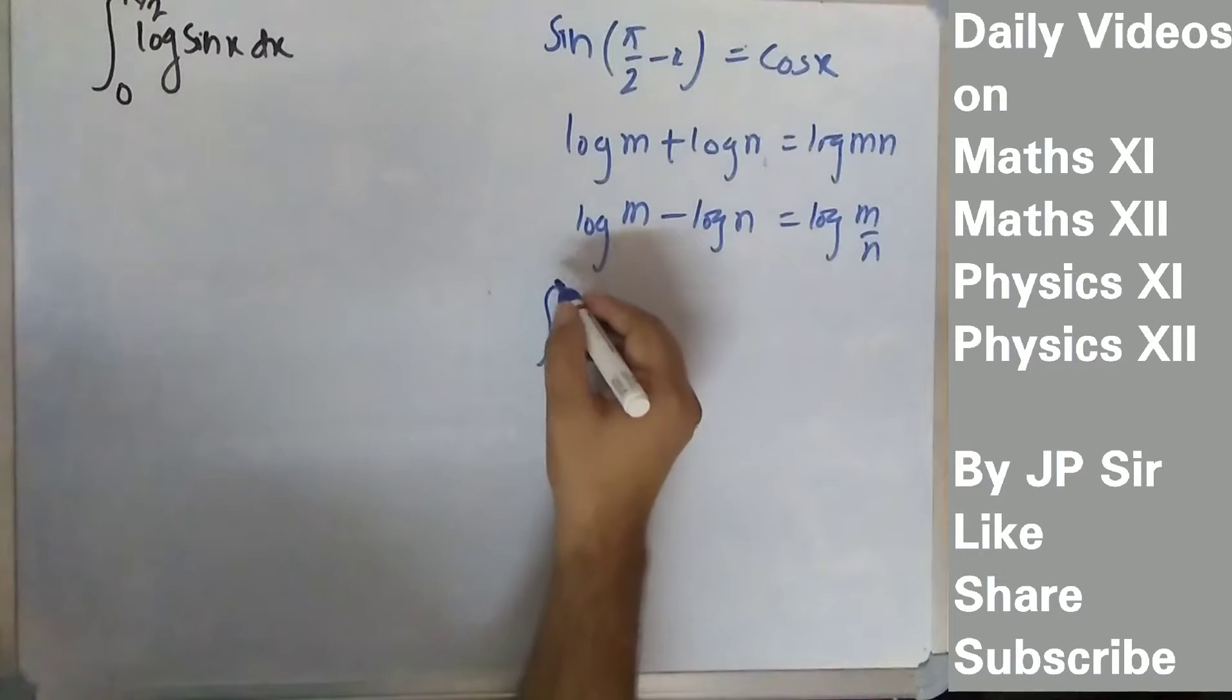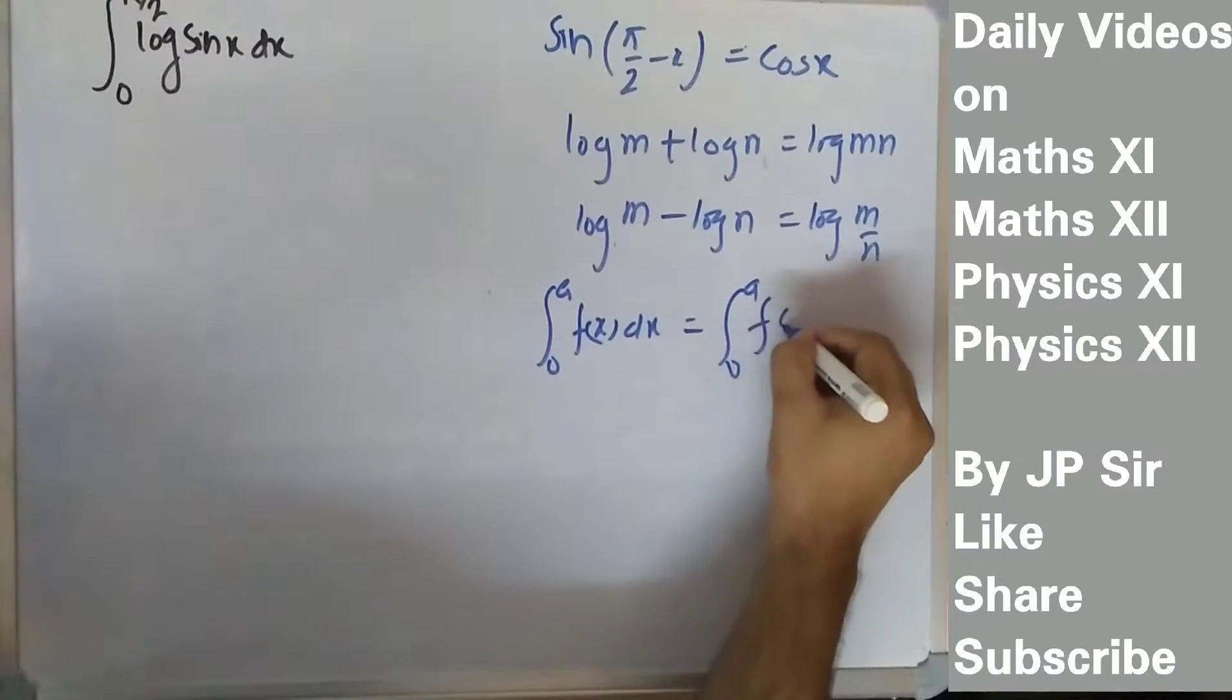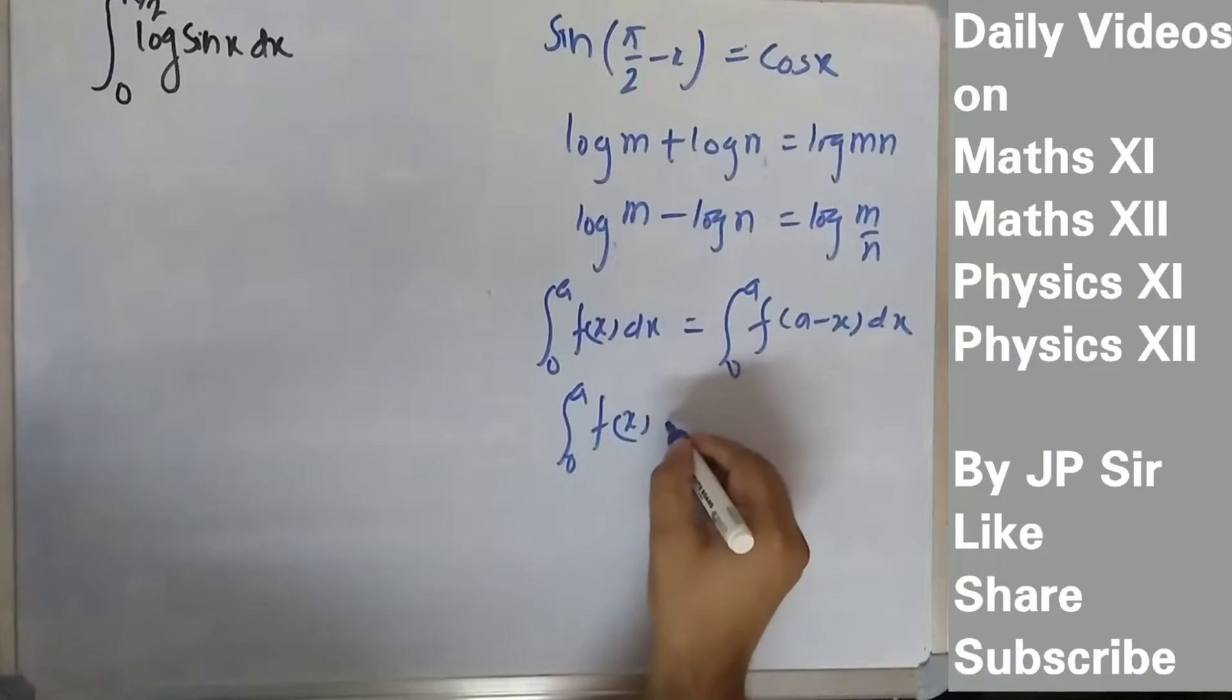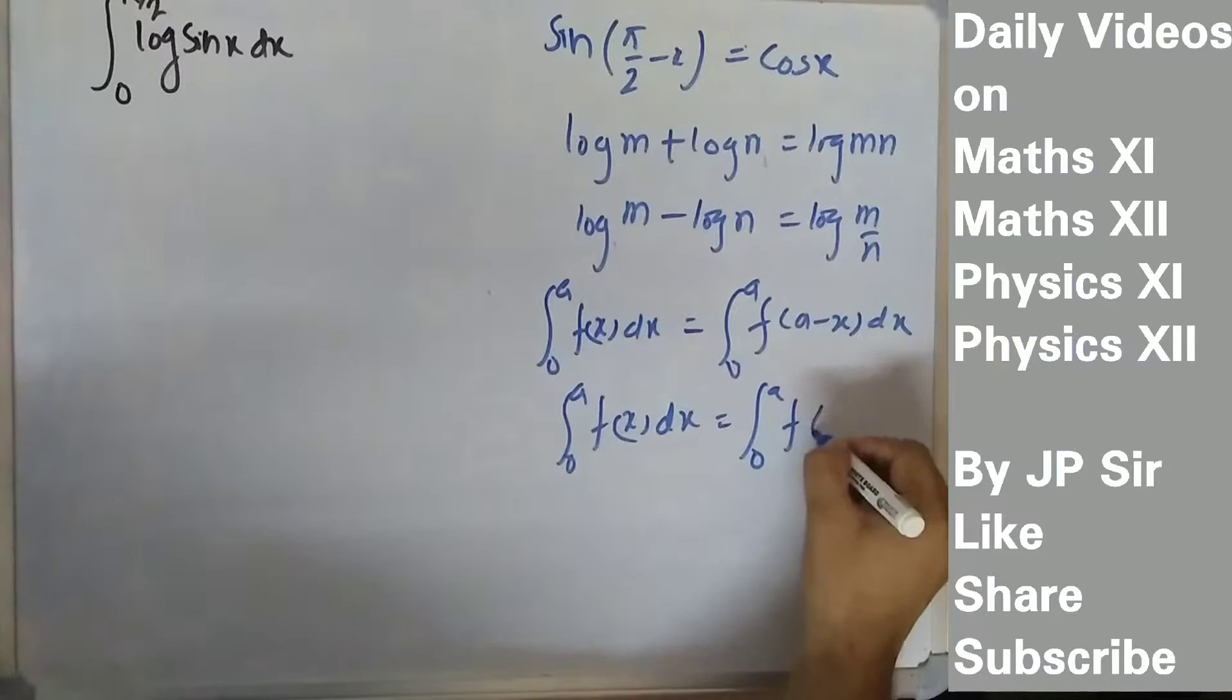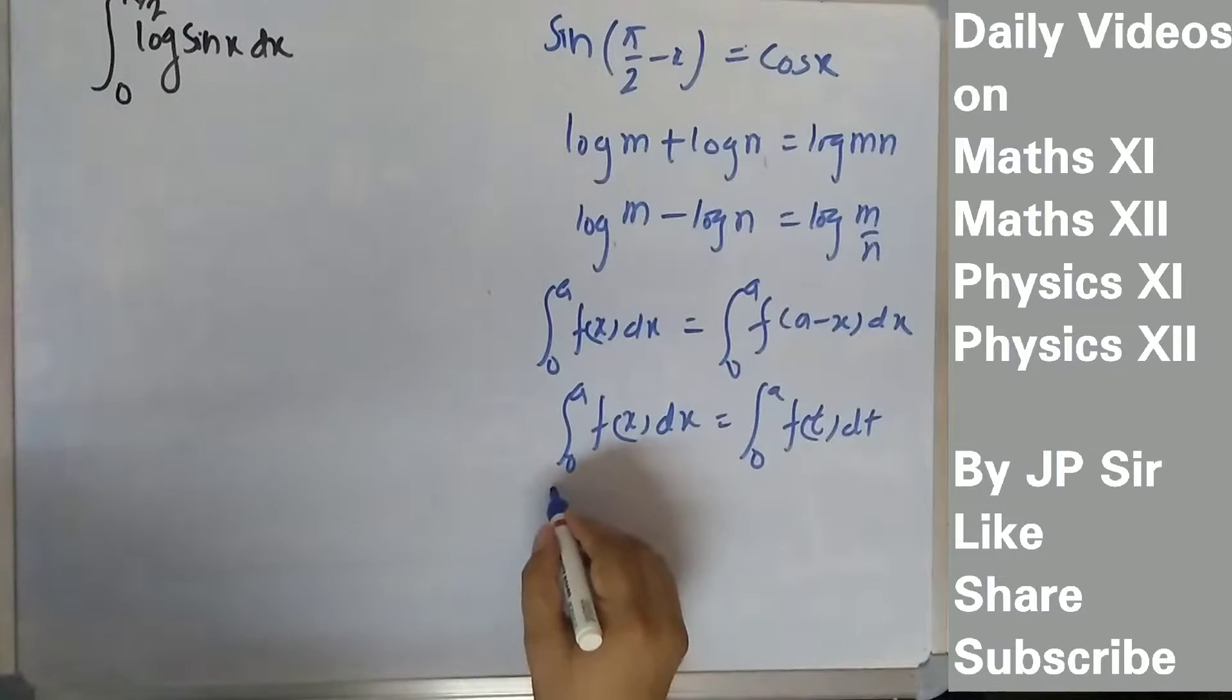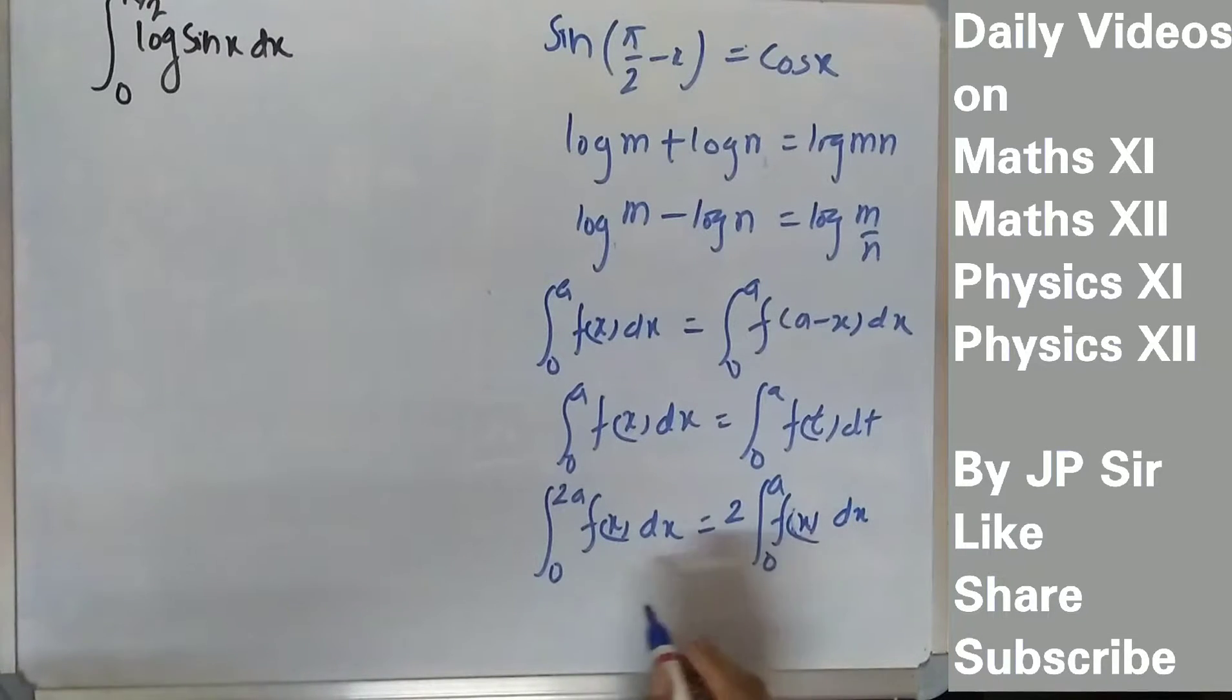Another definite integral property: if you have integral from 0 to a of f(x)dx, you can write it as 0 to a f(a minus x)dx. And the most important one: integral from 0 to 2a of f(x)dx equals 2 times integral from 0 to a if f(2a minus x) equals f(x).